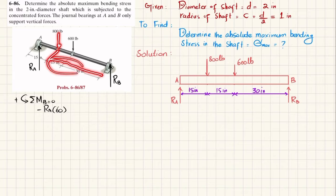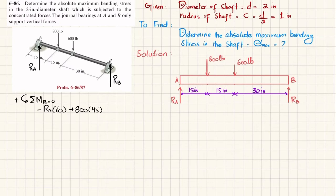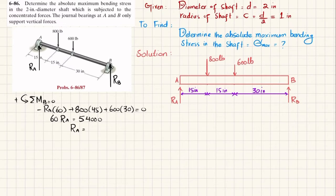The second moment is due to the 800-pound force with a perpendicular distance of 45 inches, producing a counterclockwise moment: plus 800 times 45. The third moment is due to the 600-pound force with a perpendicular distance of 30, also counterclockwise: plus 600 times 30 equals zero. From here, 60 R_A equals 54,000, giving R_A equal to 900 pounds.